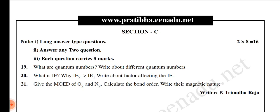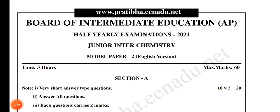Okay guys, the second set — first model paper and second model paper. We have Set 2 papers in junior inter chemistry. Let me explain the second model paper now.